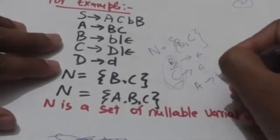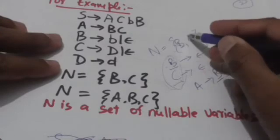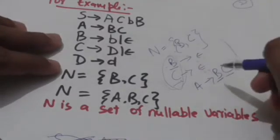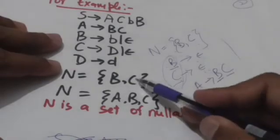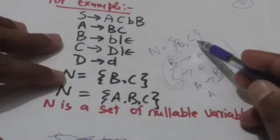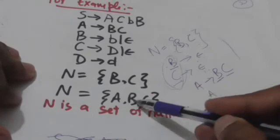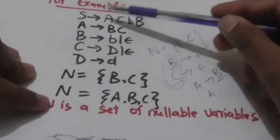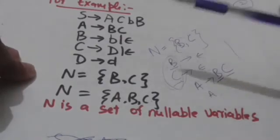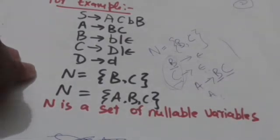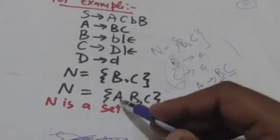Now look at the production A derives BC. Both B and C are already present in set N, which means A is also a nullable variable. So we add A to set N. Now N contains three variables: A, B, and C. There is no further variable we can add to set N, so N is the required set of nullable variables.